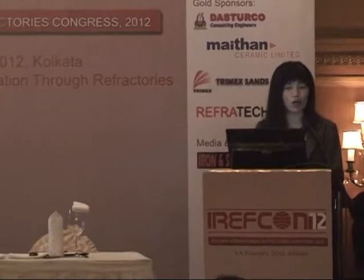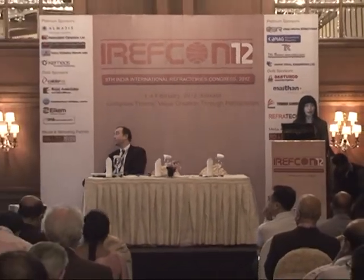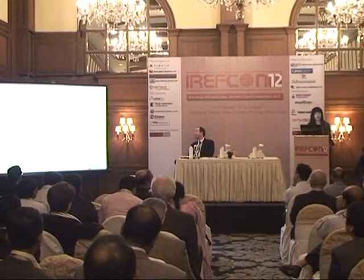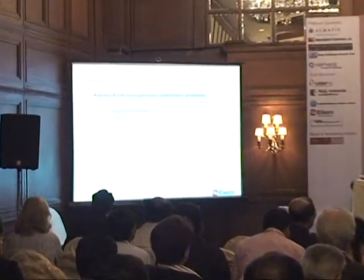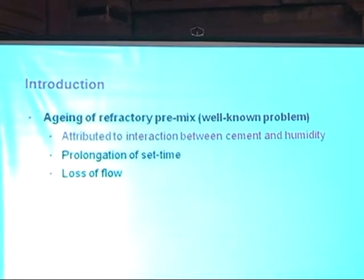We know that aging of the refractory premixes occurs for many castables and for many users. Normally we think this aging is because of the interaction between cement and humidity. As a consequence, you get the refractory castable premixes with very long setting time and loss of flow, and eventually the materials are completely destroyed — you cannot use them.